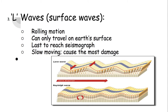So we have our P, S, and L waves. You can remember PSL — like pumpkin spice latte. P is primary and fastest. S is secondary, slower, and goes side to side. And L waves are last and they roll. Those are the parts of the earthquake and the types of waves.